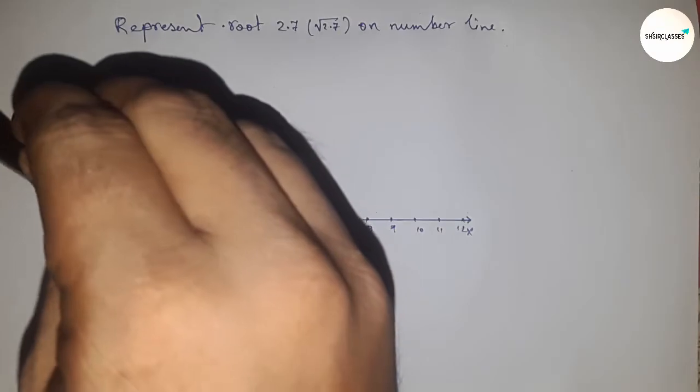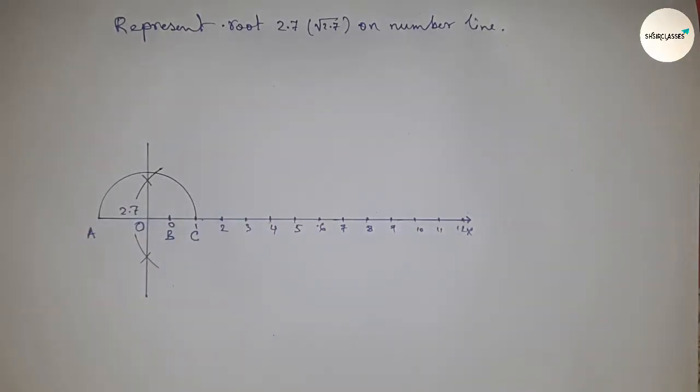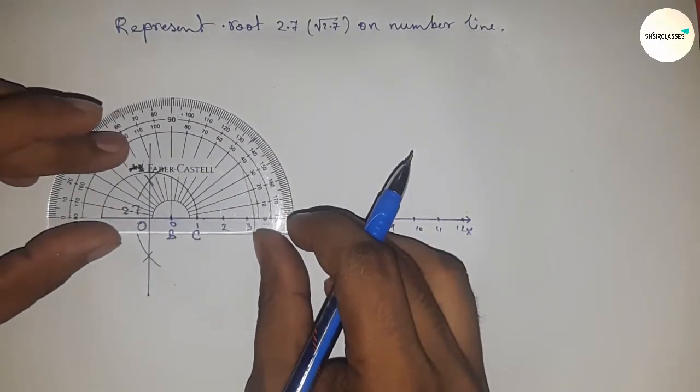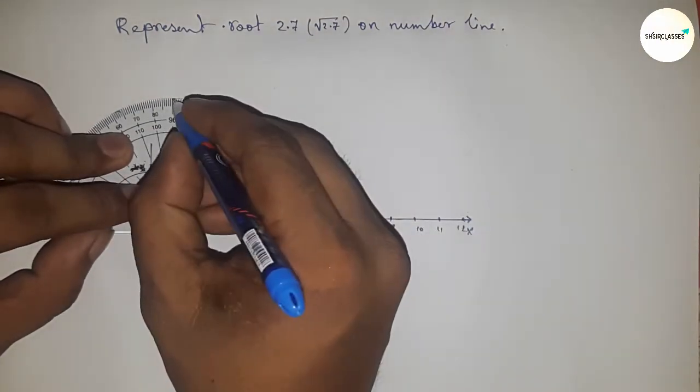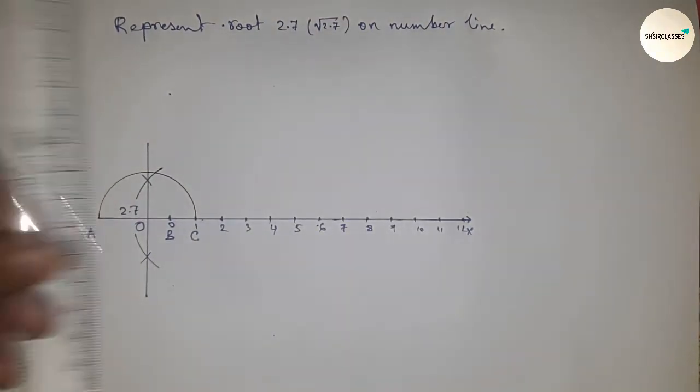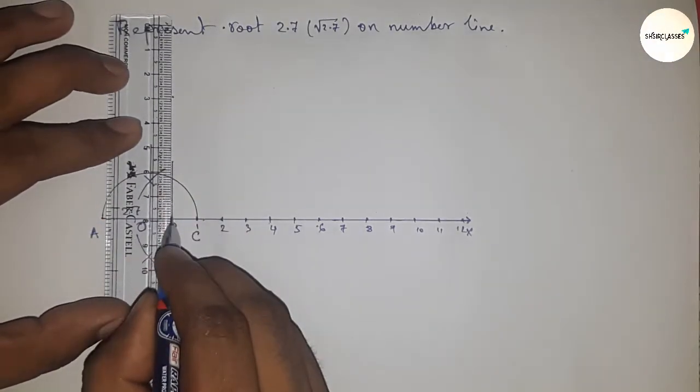Draw a 90 degree angle using a protractor on point B. Join this, which meets the semicircle at point T.